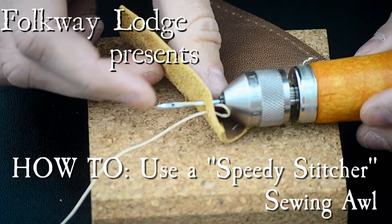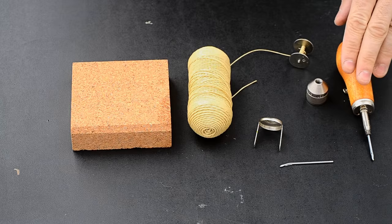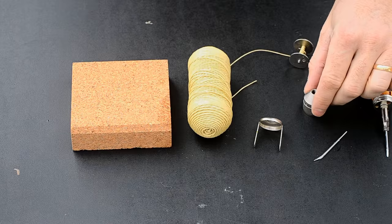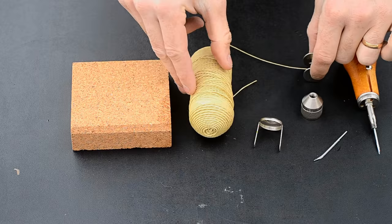Here are the materials needed: the speedy stitcher body with the straight needle, an extra crooked needle, a cap, the bobbin that holds the thread, an extra roll of 1 millimeter waxed thread, and the end cap.